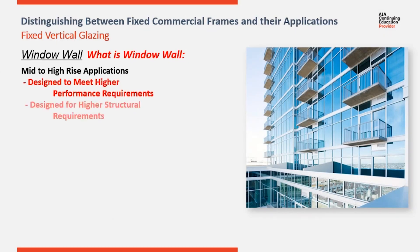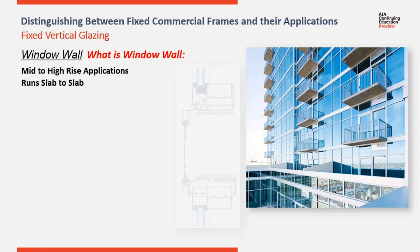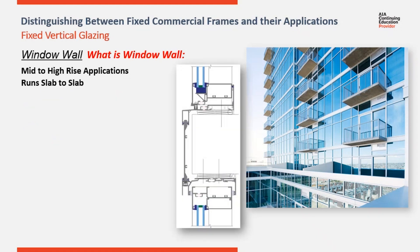Window wall is designed to be installed from the second floor up on an elevation. Because it is used on mid to high rise applications, it has been designed to meet higher performance levels — higher air, water, and structural requirements than those you find on storefront systems. Similar to storefront, window wall runs slab to slab, so it is set from within the structure of the building.